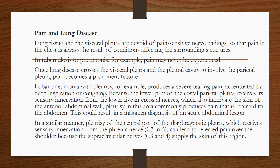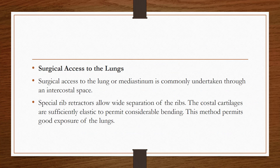Pain is referred in cases of lung disease. Surgical access to the lung or mediastinum is commonly undertaken through an intercostal space. Special rib retractors allow wide separation of the ribs. The costal cartilages are sufficiently elastic to permit considerable bending, and this method permits good exposure of the lungs.